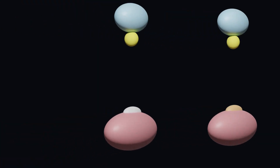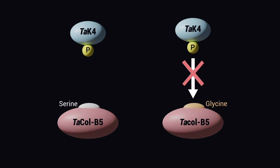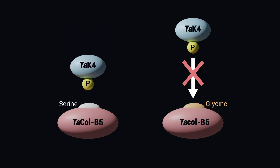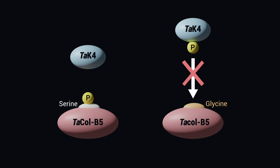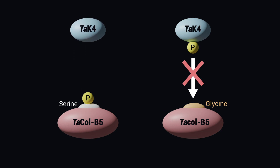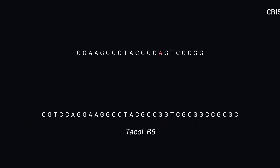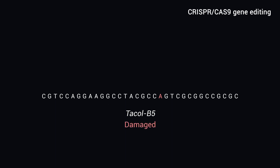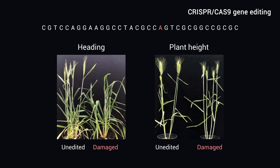We found that a single amino acid substitution in CoL5 resulted in differential protein phosphorylation by wheat K4, a serine-threonine protein kinase that we identified as a key protein-protein interactor of CoL5. Using CRISPR-Cas9 gene editing technology, we showed that the wheat CoL5 transcription factor modulates multiple traits, such as flowering time and plant height.